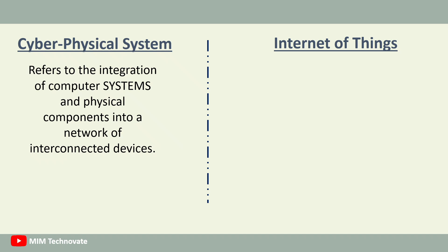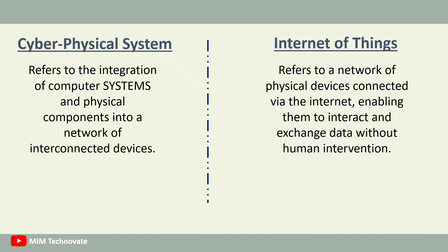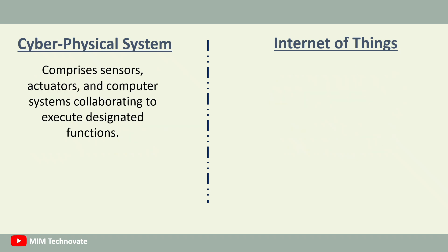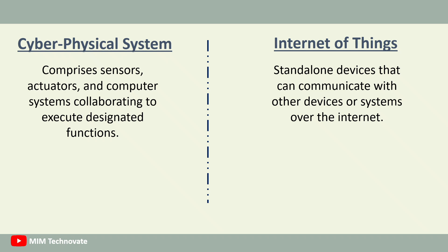Cyber-physical systems refers to the integration of computer systems and physical components into a network of interconnected devices, whereas Internet of Things refers to a network of physical devices connected via the Internet, enabling them to interact and exchange data without human intervention. Cyber-physical systems generally comprise sensors, actuators, and computer systems collaborating to execute designated functions, while Internet of Things devices are typically stand-alone devices that can communicate with other devices or systems over the Internet.